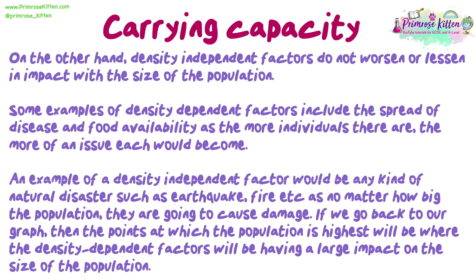An example of a density-independent factor would be any kind of natural disaster, such as an earthquake or a fire, as no matter how big the population, they are going to cause damage. If we go back to our graph, the points at which the population is highest will be where the density-dependent factors are having a large impact on the size of the population.